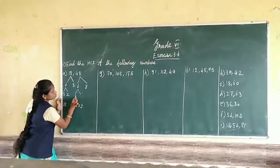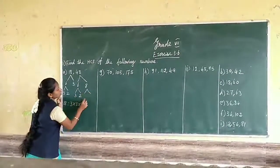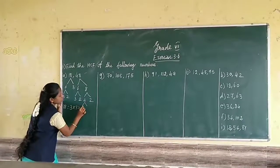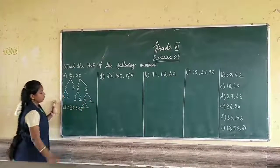This one 3 into 2, 6. Here 4 into 2, 8. Again 2 into 2, 4. So we can write as 3 into 2, 4 times.